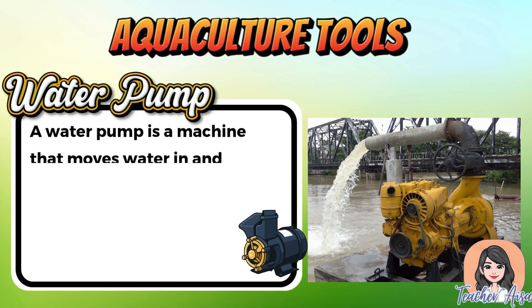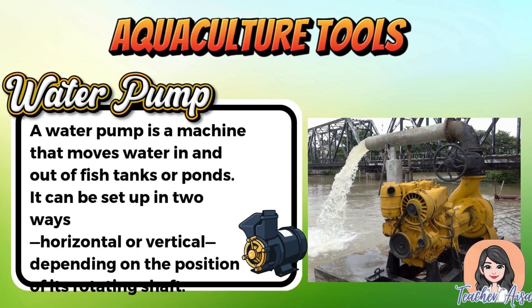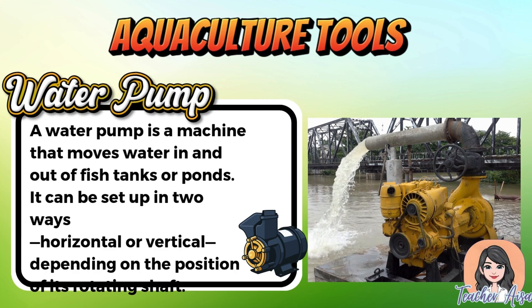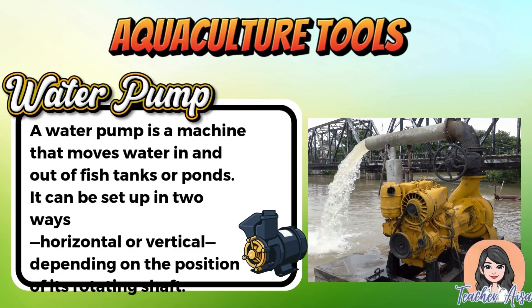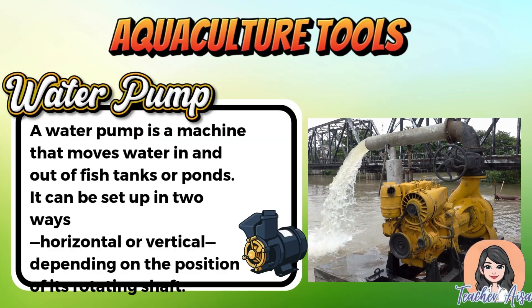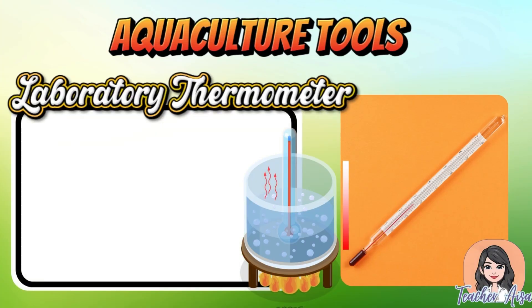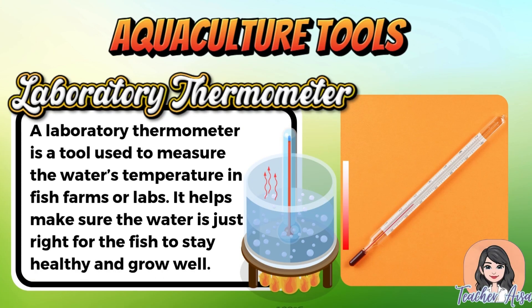First is a water pump — a machine used to move water in and out of fish tanks or ponds. It helps maintain the proper water flow and circulation needed for fish to survive. The pump can be installed either horizontally or vertically depending on how its rotating shaft is positioned. Next is a laboratory thermometer, an important tool used to measure the temperature of the water, helping ensure that fish stay healthy and grow properly in their environment.